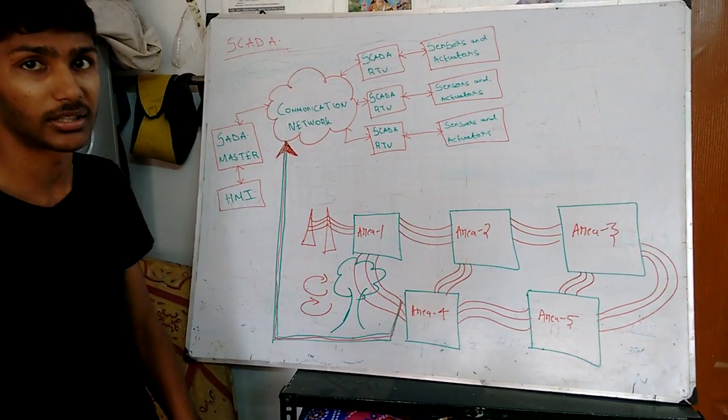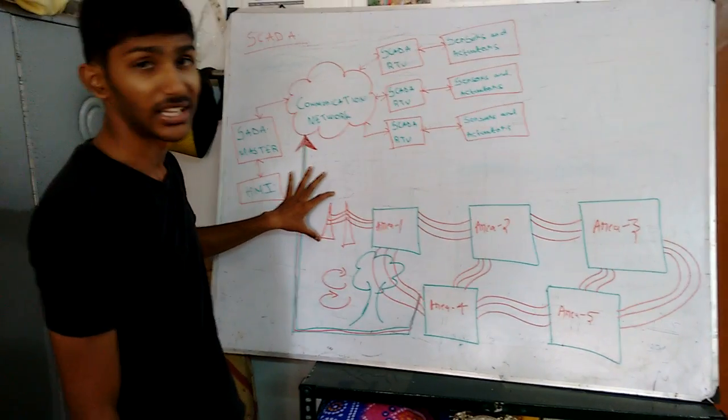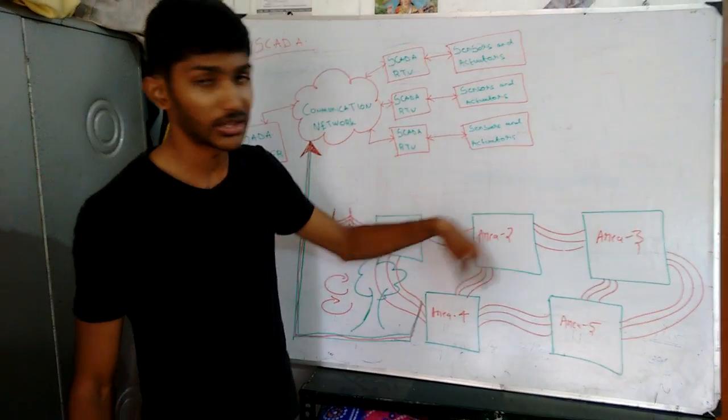This is the sequential diagram showing five areas connected to transmission lines. This is the transformer. These are the transmission lines connecting area 1, area 2, area 3, area 4, and area 5.